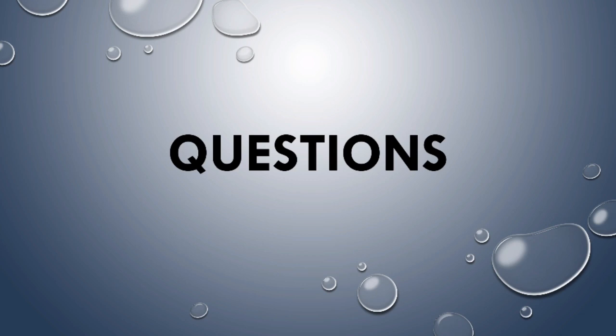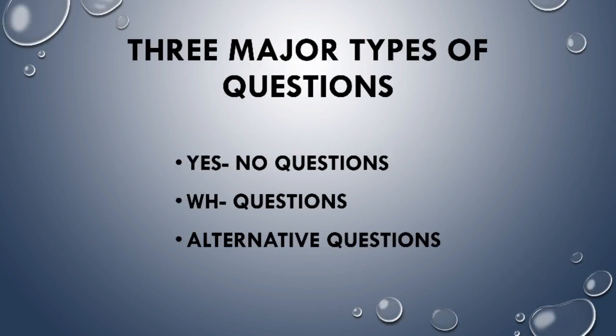We are going to know about questions. You all know questions. What are questions? In this chapter we are going to see some major types of questions. Students, mainly there are three major types of questions that we have. First one: yes or no questions. Next: WH questions. And next one is alternative questions.